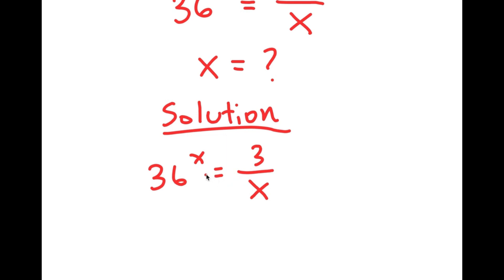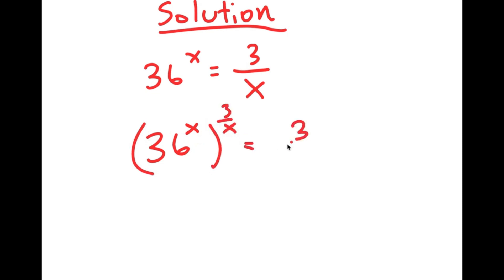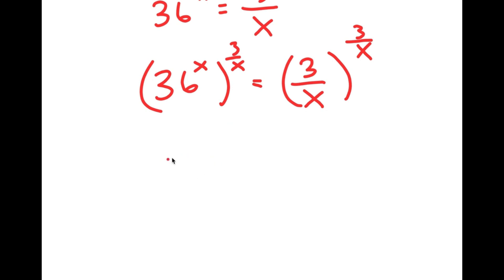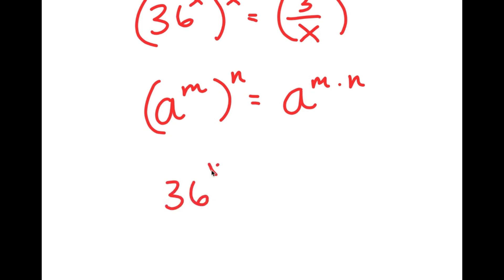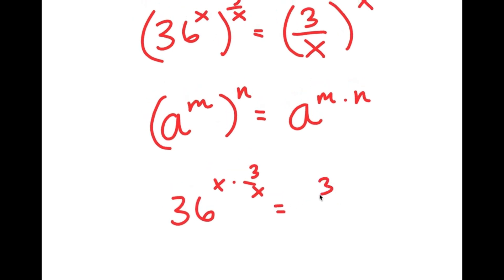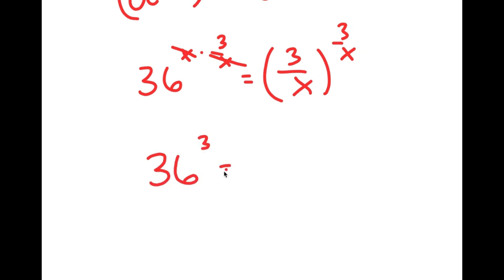What I'm first going to do is take the power of 3 over x on both sides. So now I have 36 to the power of x to the power of 3 over x is equal to 3 over x to the power of 3 over x. If I have something in the form a to the power of m to the power of n, this equals a to the power of m times n. So 36 to the power of x to the power of 3 over x equals 36 to the power of x times 3 over x, which equals 3 over x to the power of 3 over x. These two x's cancel out and I get 36 to the power of 3 is equal to 3 over x to the power of 3 over x.